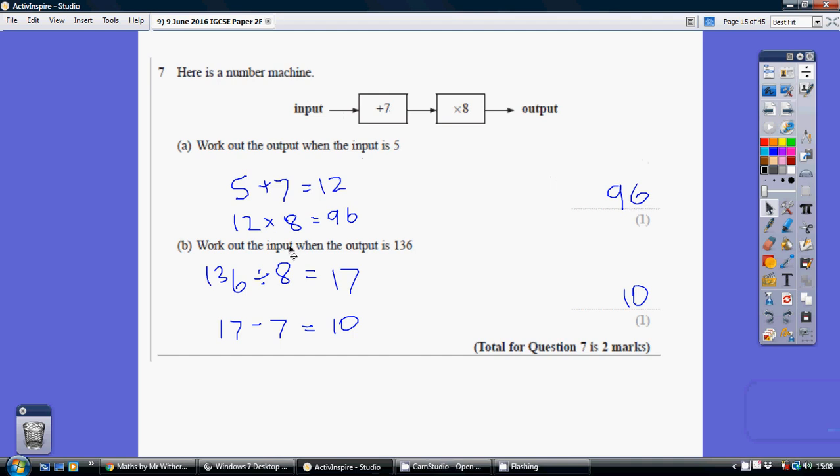Now working out the input when you've got the output, so you're going from right to left, is a bit more complicated. You've just got to do the opposite operations. So we're going to kick off by not multiplying by 8 but dividing by 8, and then once we've done that we're not going to add 7, we're going to take away 7 to get to our input.